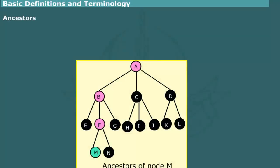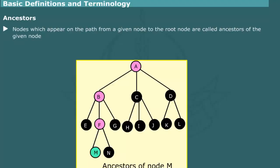Ancestors. Recall that in a tree structure, a node has a unique path to the root node. All nodes which appear on the path from a given node to the root node are called ancestors of the given node. For example, ancestors of M are F, B, and A.